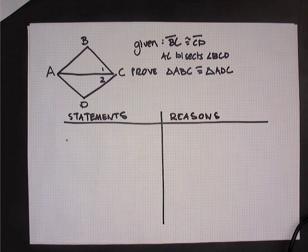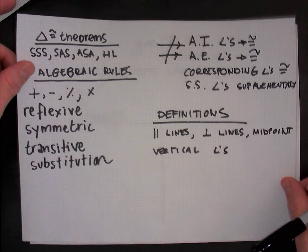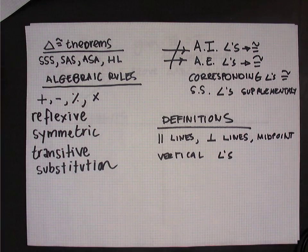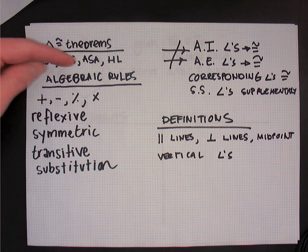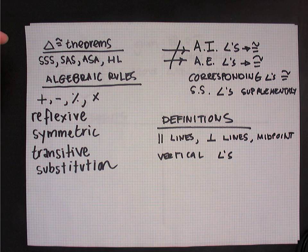What can those reasons look like? I have a list here — it's not exhaustive, but it's a nice place to start. First on the list is the series of triangle congruence theorems we've been studying in class. We have side-side-side, side-angle-side, angle-side-angle, and HL. Every single two-column proof we write to prove that triangles are congruent is going to use one of these four theorems.